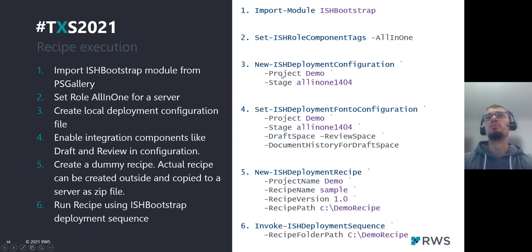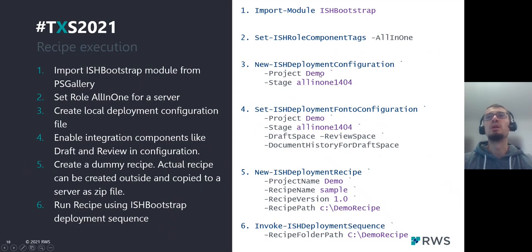The same project and stage parameters will be used in the recipe to reference configuration options and find them in the configuration file, because one configuration file can contain different stages. For example, project can be a company name or any name you like, and stage is usually the name of the environment like development, test, production, and so on.